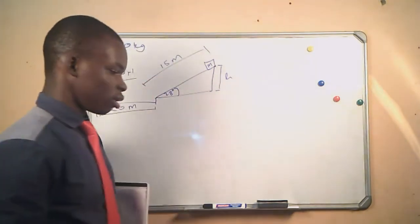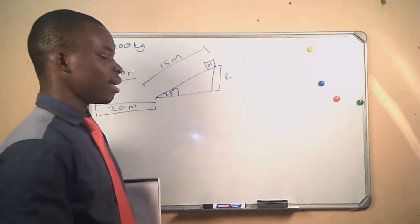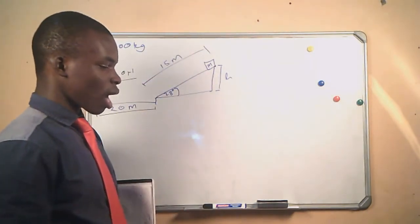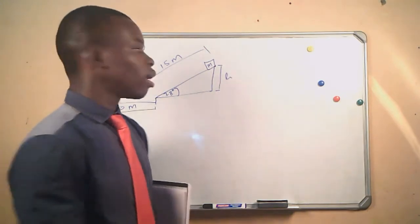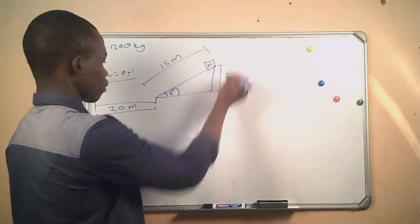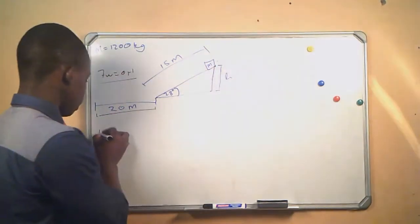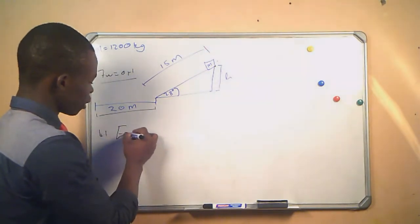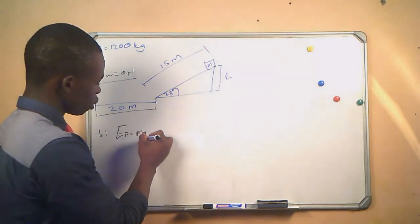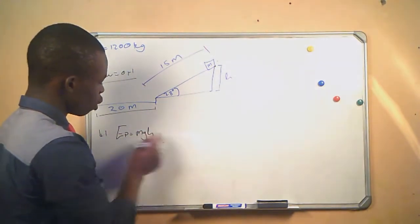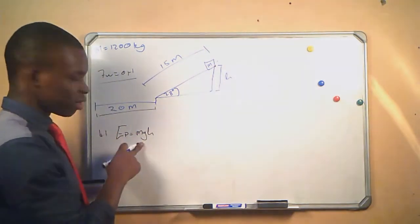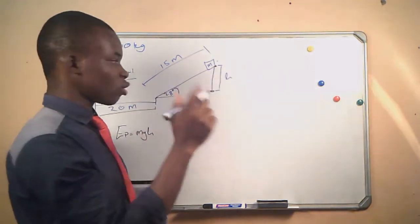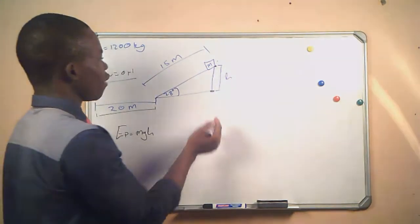For the first question, we determine the potential energy of the motor car at the top of the slope — this is the top. We know that potential energy is given by mgh. We have the mass and we have gravitational acceleration, but we do not have the height. So first we must calculate for the height.